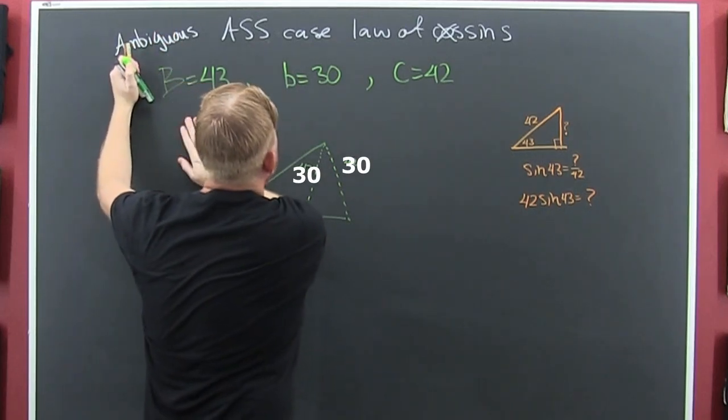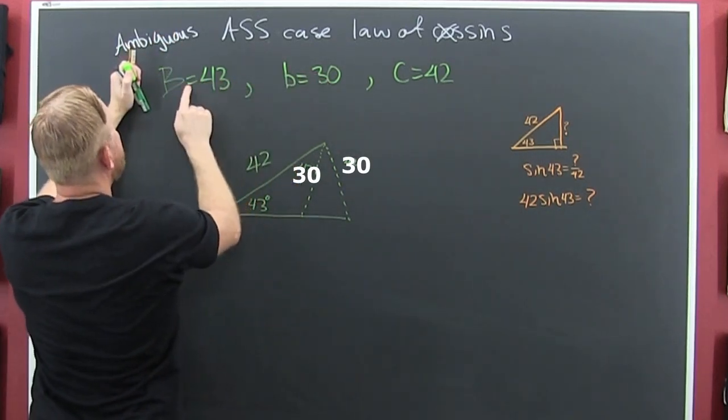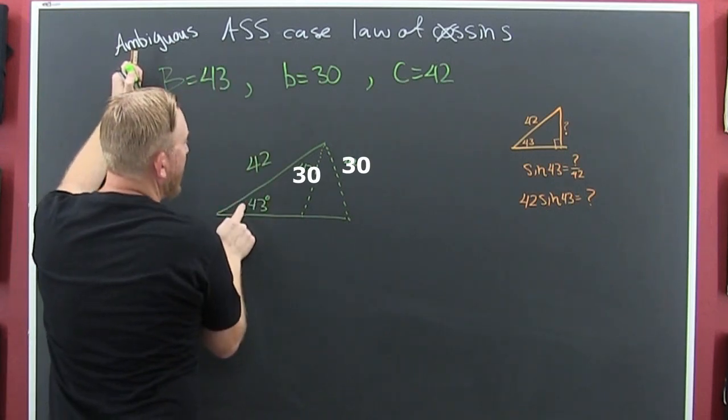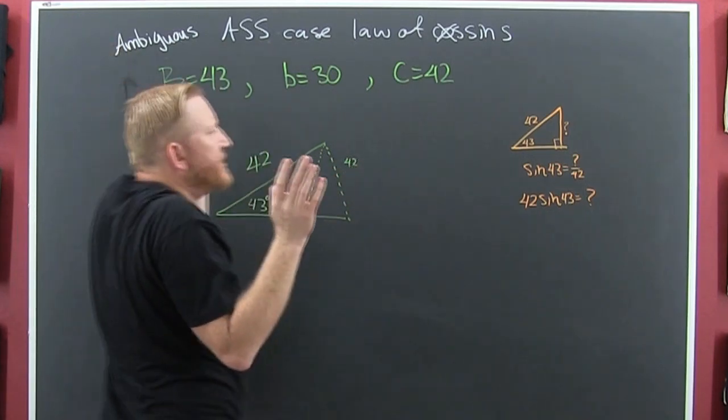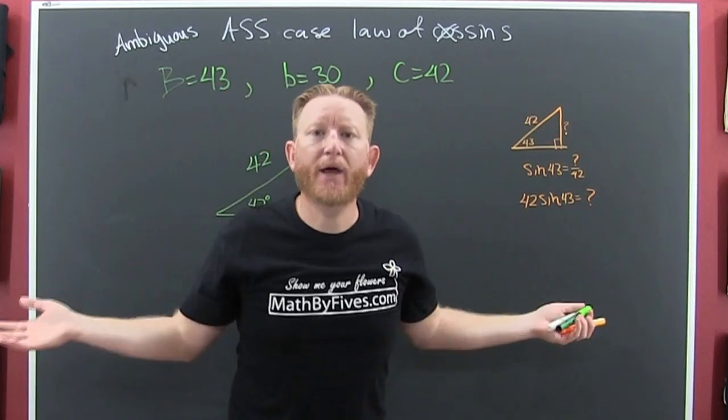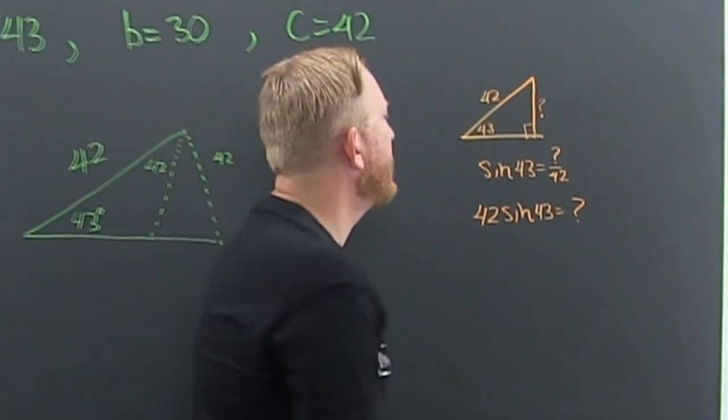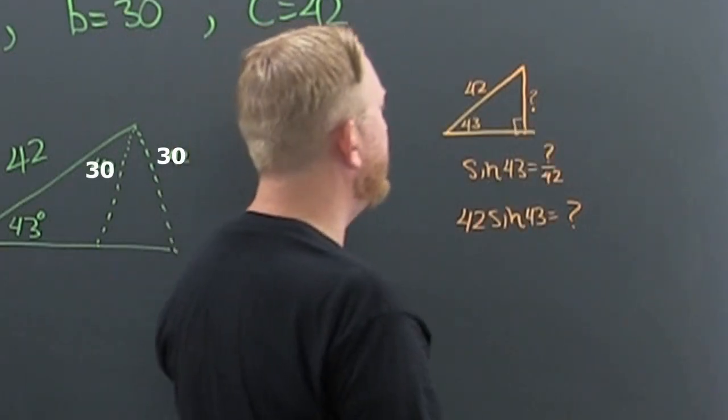Ambiguous. What do we need? We need the side opposite the angle. So we have the side opposite the angle. Now, what if this was a right triangle? If this was a right triangle, what should that side be?